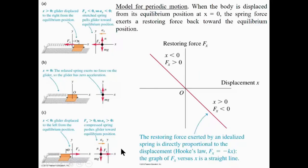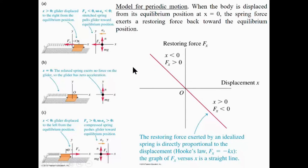Here's an example: a mass-spring oscillator on a frictionless air table. The equilibrium position is where the spring is relaxed — not compressed, not extended — and the net force is zero. If you pull the glider slightly and release it, it undergoes simple harmonic oscillation. If you plot restoring force versus displacement, you'll clearly see they are linearly related with a negative slope — proportional but opposite in direction.